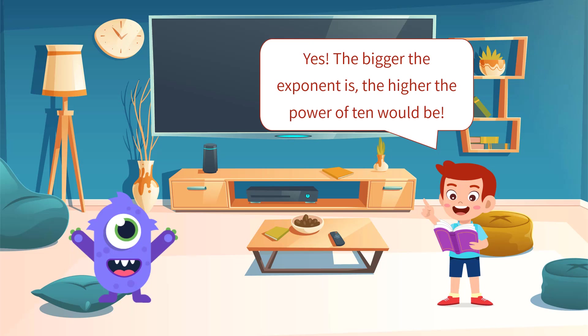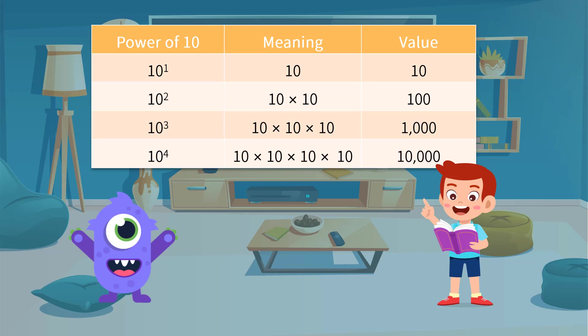The number of exponents actually means the number of zeros following behind the one. When the exponent is one, this means there is only one zero after ten. It is ten itself. When the exponent is two, three, or four,